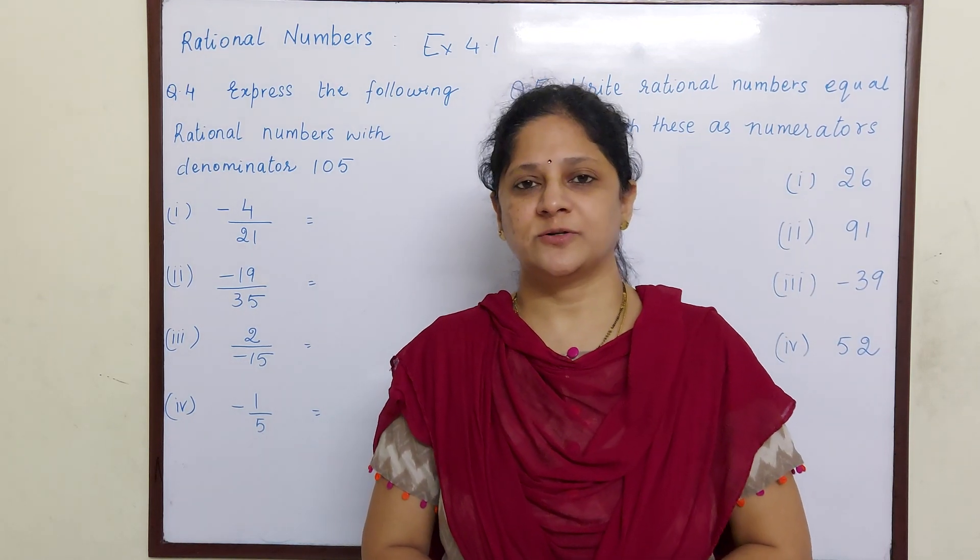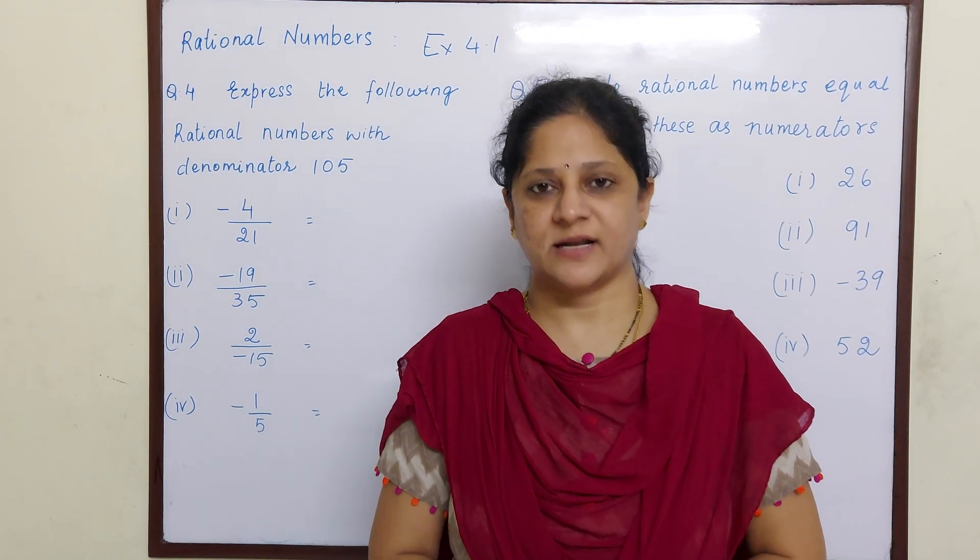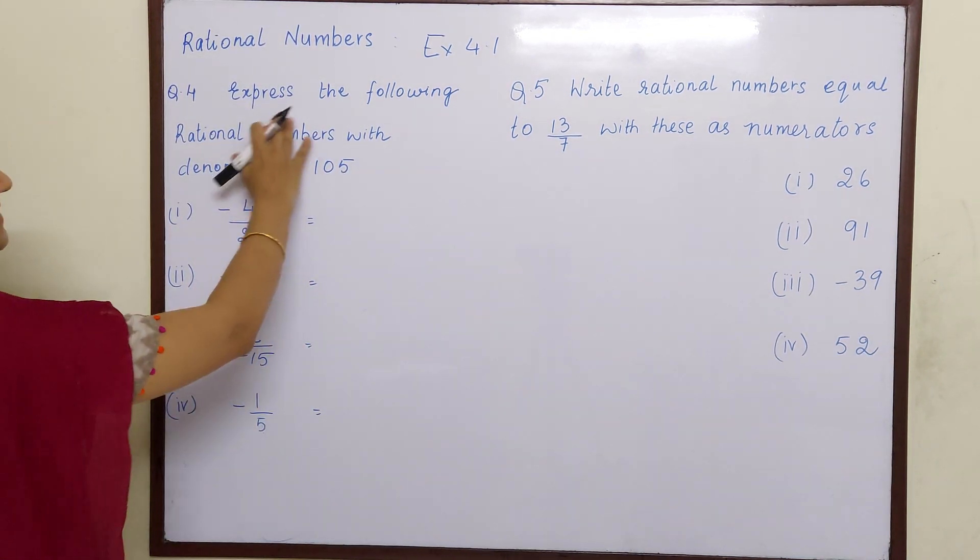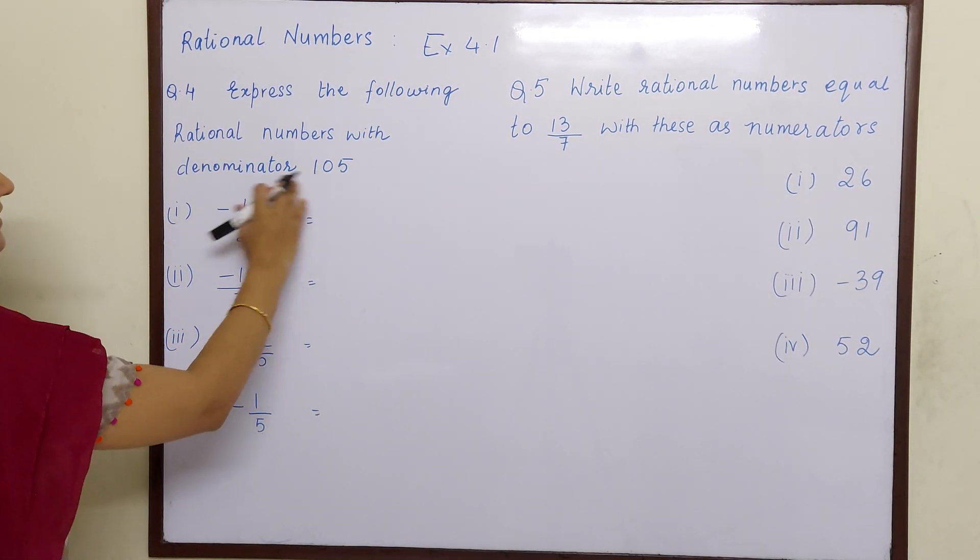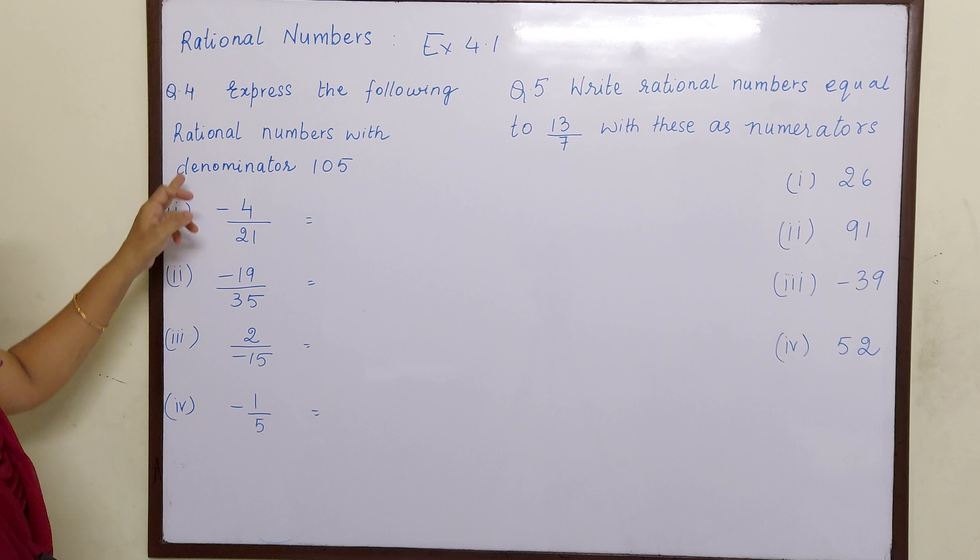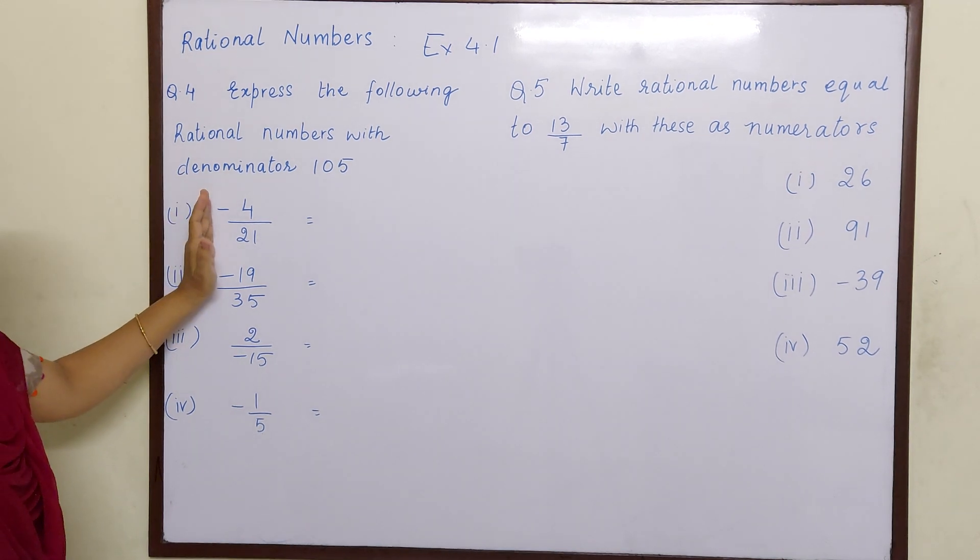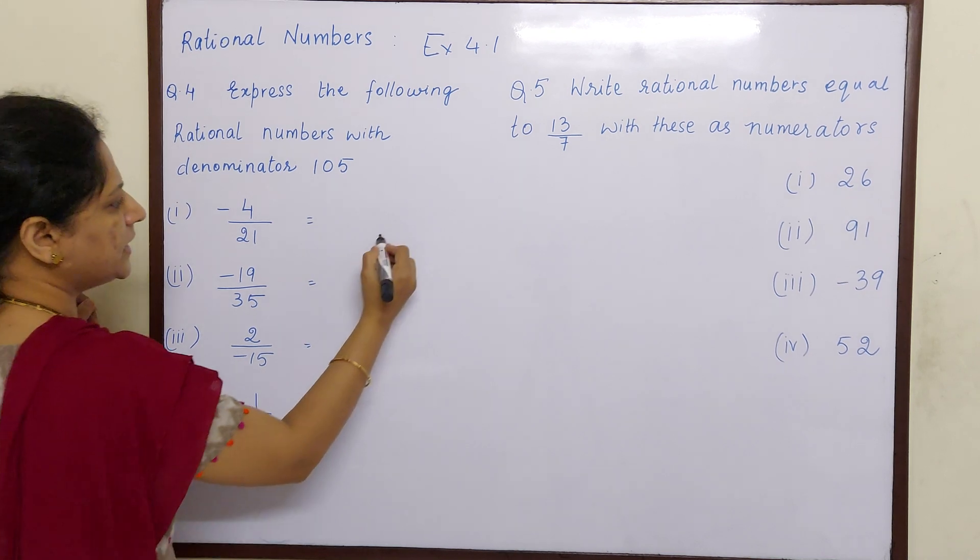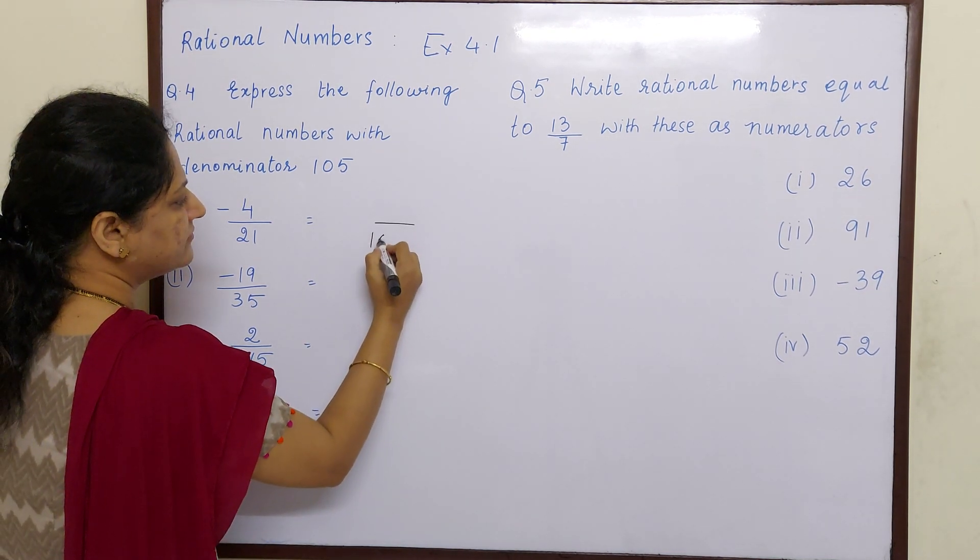Hello children, so today we are going to start with yet another sum on rational numbers. Express the following rational numbers with denominator 105. That means they have given us these rational numbers and they want us to convert these rational numbers, but the condition is that the denominator should be now 105.